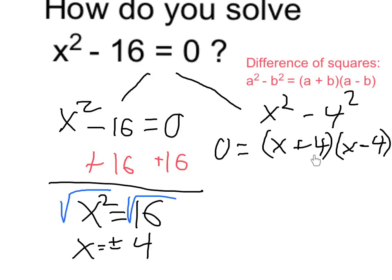So in order for that to be true, either this has to be 0 or this has to be 0. The first binomial is 0 if x is negative 4, the second if x is positive 4. So we see that we do get the same result that x is equal to positive or negative 4.